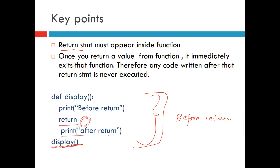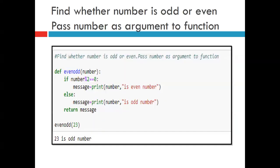When we call display, the output will only show 'before return' — it will not print 'after return' because once the return statement is reached, the function exits. Next example: find whether a number is odd or even by passing a number as argument to a function. We create a function 'even_odd' that takes a 'number' argument.